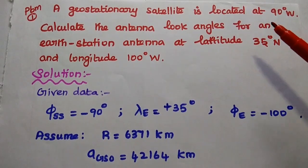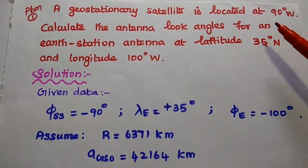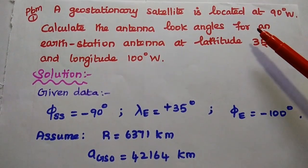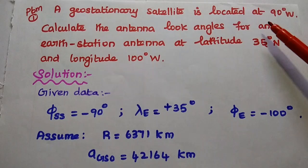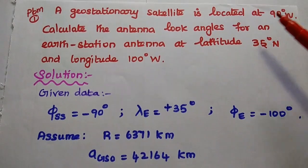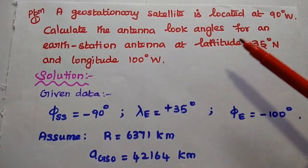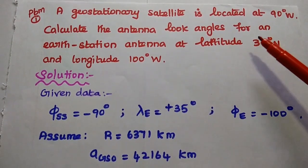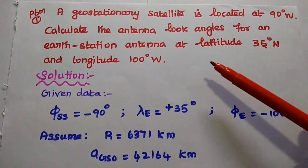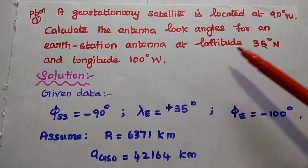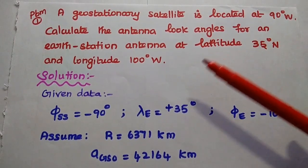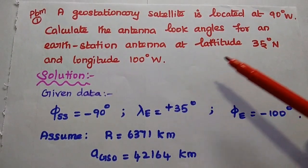Let's solve one important problem. A geostationary satellite is located at 90° west. Calculate the antenna look angles for an earth station antenna at latitude 35° north and longitude 100° west.